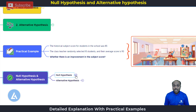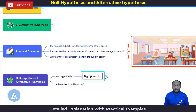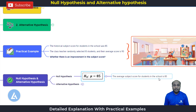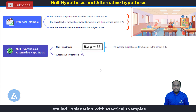Now let's understand the null hypothesis and alternative hypothesis in this example. The null hypothesis, as we have seen, is always in equality. It is indicated as H0 colon mu is equal to 85. The meaning of this statement is: the average subject score for the students in the school is 85, indicating that mean mu is equal to 85.